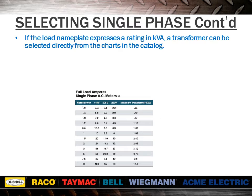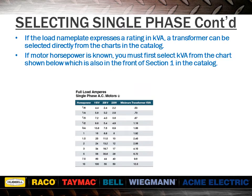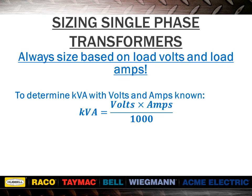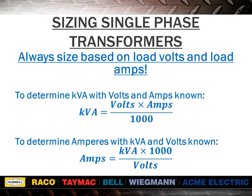If the load nameplate expresses a rating in kVA, a transformer can be selected directly from the charts in the catalog. If motor horsepower is known, you must first select kVA from the chart in the front of Section 1 in the catalog. Note that if motors are started more than once per hour, increase the minimum kVA by 20%, due to the fact that motors start under locked rotor condition and starting amps will be six or seven times the normal running amps. The amp rating on the motor is the most accurate way to size a transformer. To determine kVA with volts and amps known: multiply volts by amps and divide by 1,000. To determine amps with kVA and volts known: multiply kVA by 1,000 and divide by the volts.